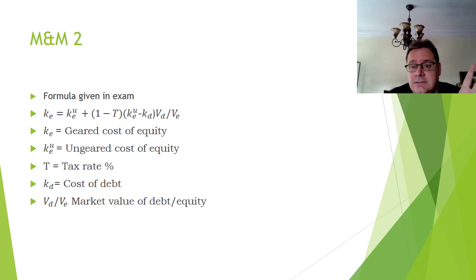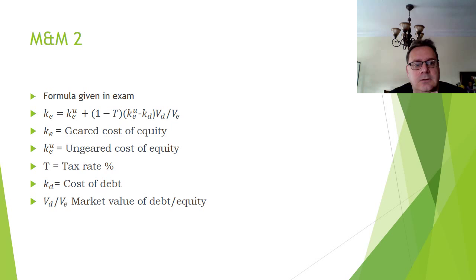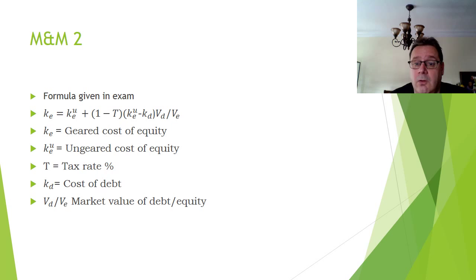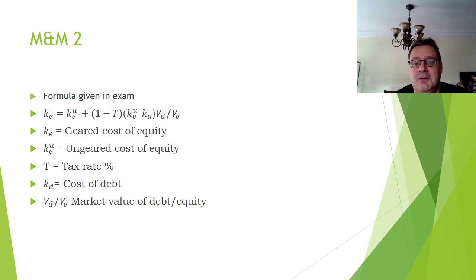I have never seen this formula used in the exam in 25 years. Ke is your geared cost of equity; Keu is the cost of equity as if the company had no debt at all — ungeared cost of equity; t is the tax rate; Kd is cost of debt; Vd is market value of debt; Ve is market value of equity. Remember: you are always, always dealing with market values in Modigliani and Miller.